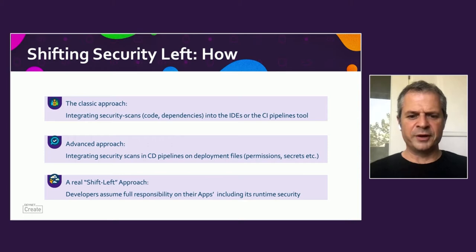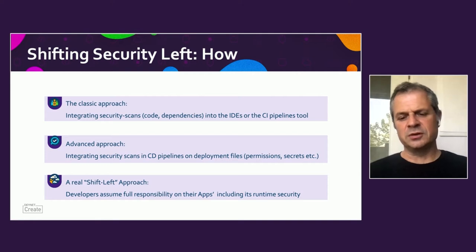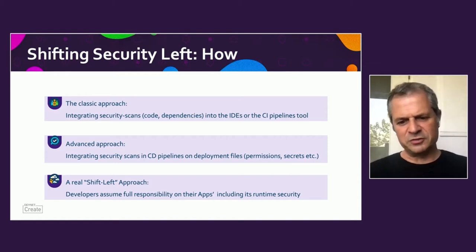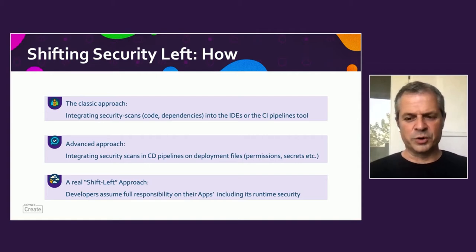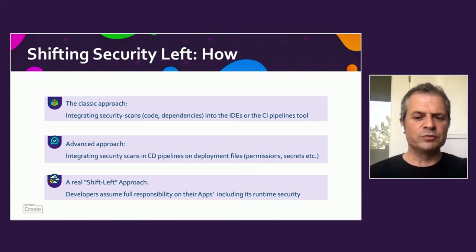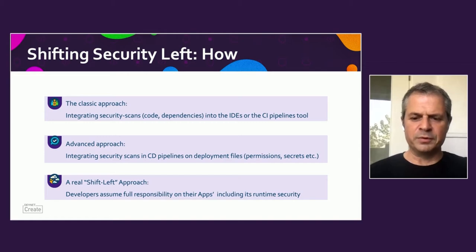A more advanced approach takes these scans one step further. Under the assumption that everything is now codified — infrastructure as code, deployment files — we also want to extend code scans to deployment files. This is where we can find overly permissive permissions, secrets kept in clear text, runtime configurations that shouldn't be there, and other elements worth catching before deployment.